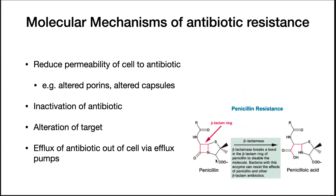This beta-lactamase will actually split the beta-lactam ring and make the antibiotic no longer effective. You can also alter the target — resistance to rifampicin is based on a mutation in the beta-prime subunit of RNA polymerase that changes it so the antibiotic can no longer bind. And finally, efflux pumps will be increased in expression and will pump the antibiotic out of the cell.